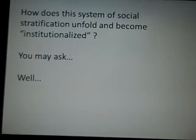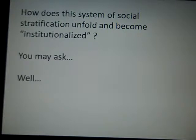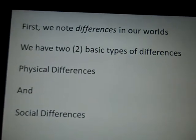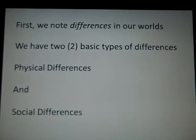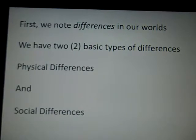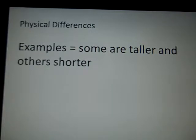So, how does this system of social stratification unfold and become institutionalized? Well, we'll talk about that. Here's how stratification works. We have two basic types of differences in the world: physical differences and social differences. We'll start with physical differences.